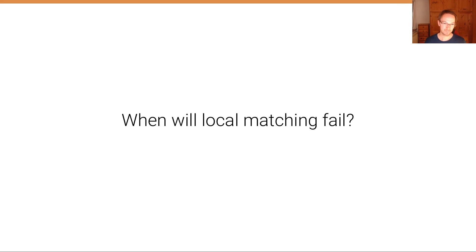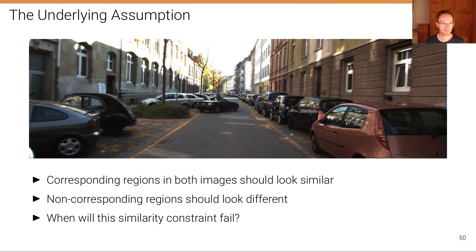Let's recap quickly what are the challenges. When will local matching fail? What is the underlying assumption? Corresponding regions in both images should look similar, and non-corresponding regions should look different. So when will this fail?